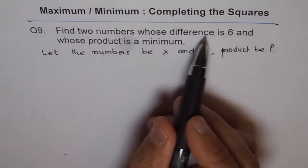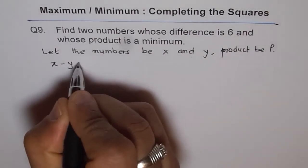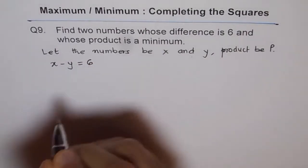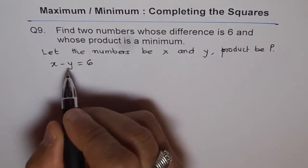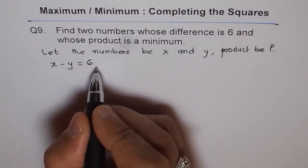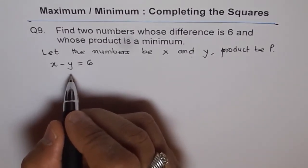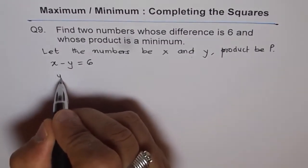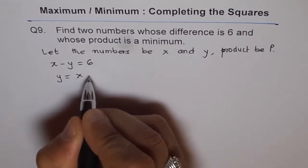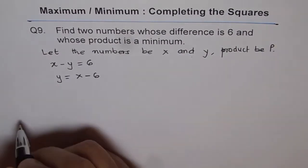Now the two numbers whose difference is six, so x minus y equals six. From here we can write one in terms of the other. Let's write what y equals, so we can write y equals x minus six. Take y on the other side, we get y as x minus six.